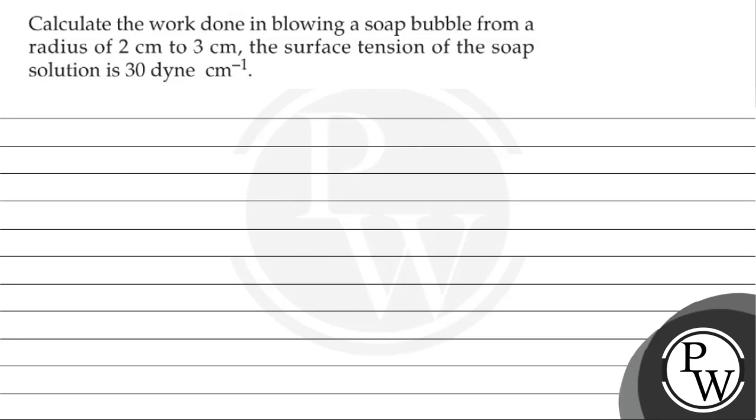Hello. Let's see the question. Calculate the work done in blowing a soap bubble from a radius of 2 cm to 3 cm. The surface tension of the soap solution is 30 dyne per centimeter.